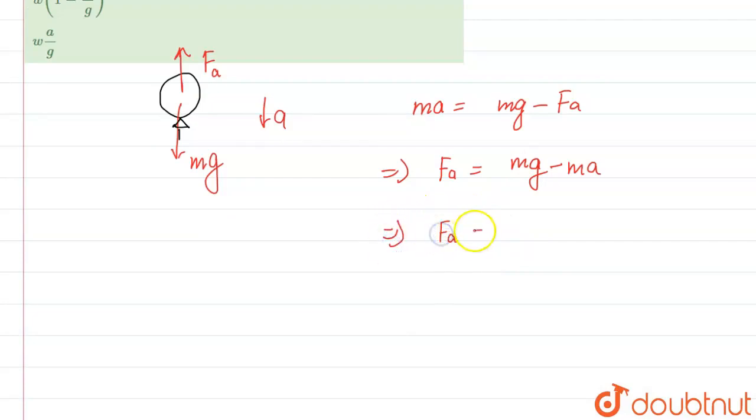So now what we'll do: we'll write Fa. We can write one thing - mg over here. Mg is equal to W, so we can write m as W upon g. That we are going to use.